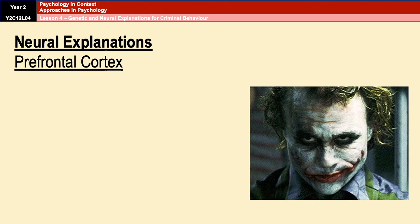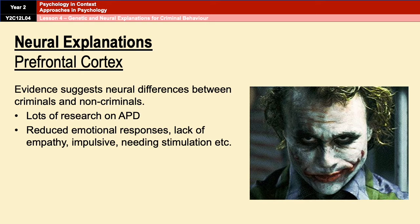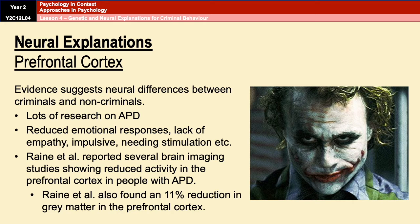Moving on to neural explanations: these focus on structures in the brain that may be slightly different in offenders than in non-offenders. A lot of evidence in this area has involved individuals diagnosed with antisocial personality disorder (APD). Symptoms of APD include reduced emotional responses and a lack of empathy. Raine et al. conducted many studies of APD and reported, using brain imaging techniques, that individuals with APD have reduced activity in the prefrontal cortex — a part of the brain that regulates emotional activity. Raine and colleagues in 2000 also found an 11% reduction in the volume of grey matter in the prefrontal cortex of people with APD compared to controls.